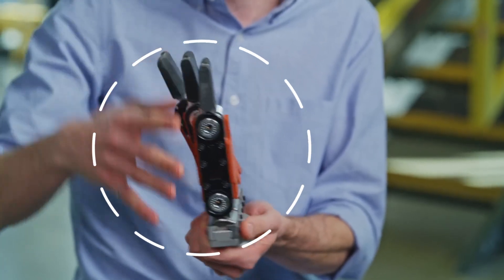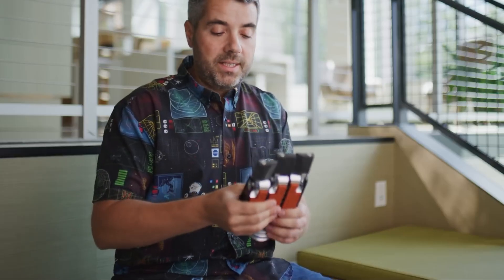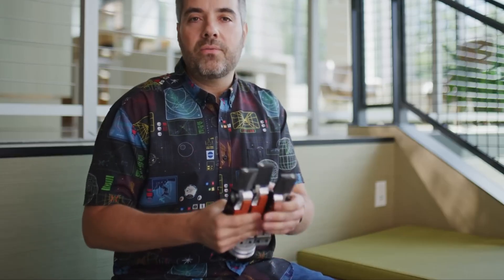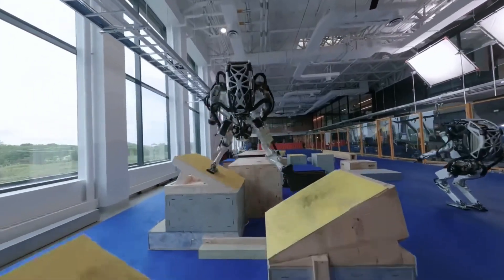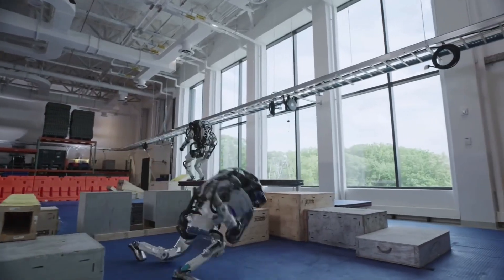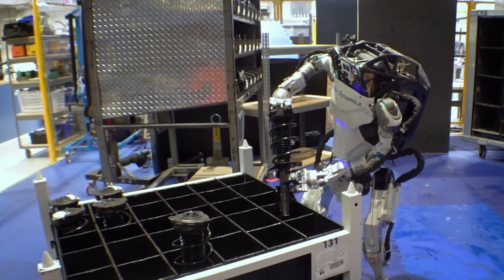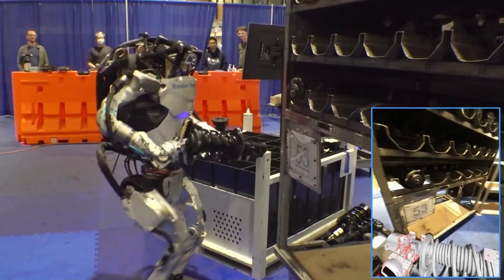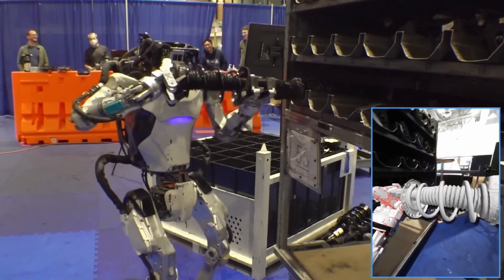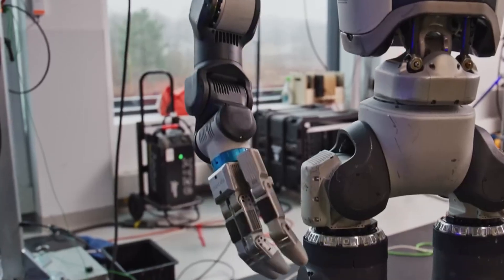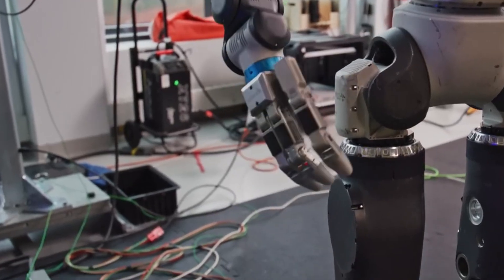That started with the GR1, a minimalist three-finger prototype that helped them learn how to mount a hand onto a humanoid that sometimes falls face first. Because yes, when a robot trips, it usually lands on its own hands, and if those break, you're done. GR1 survived most of the time, but not always. That data shaped GR2.